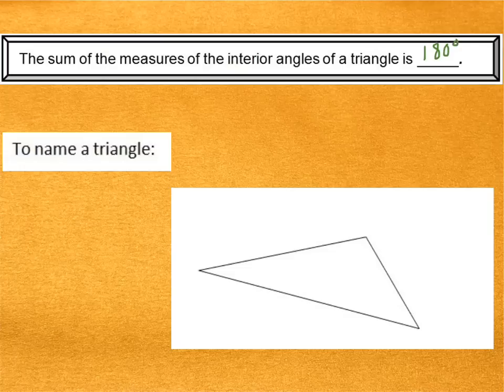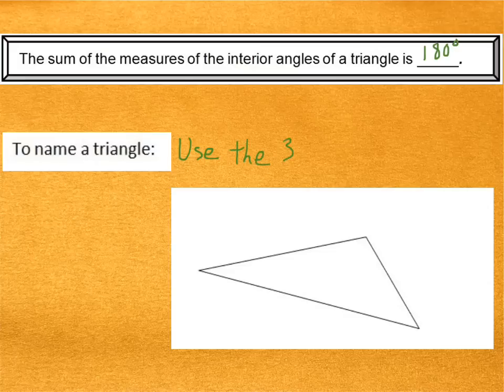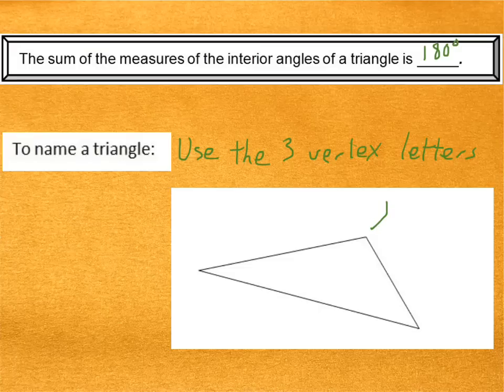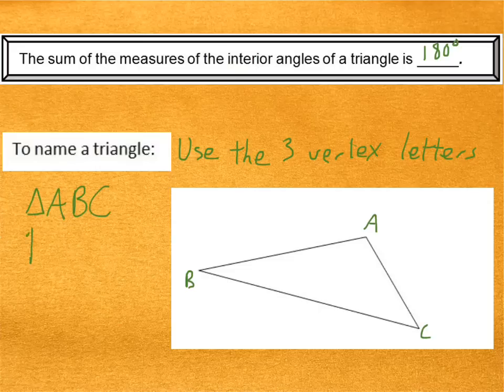Now, I should also tell you how we name a triangle in geometry, just like we've named other things. We name a triangle using the three vertex letters. Each vertex is the corner of a triangle. So let's just say that this triangle has vertices A, B, and C. In this case, this would be called Triangle ABC. Notice the triangle symbol in front. So we use those three letters.